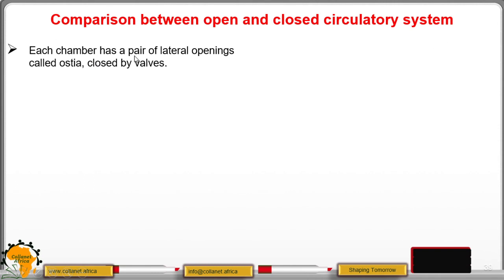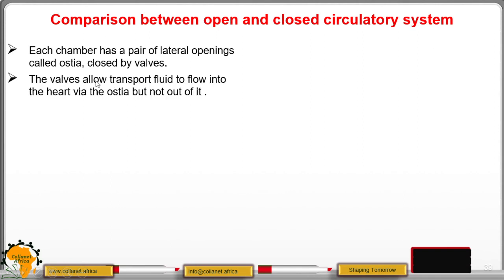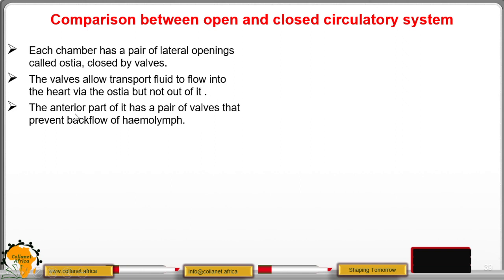Each chamber has a pair of lateral openings called ostia, controlled by valves. The valves allow transport fluid to flow into the heart through the ostia but not out of it. The anterior part has a pair of valves that prevent backflow of the haemolymph.